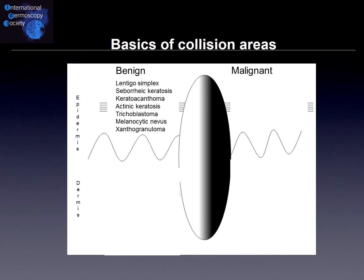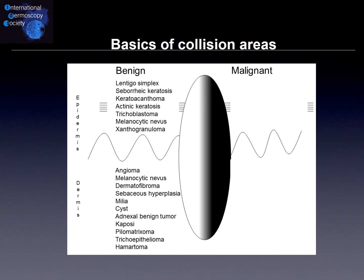When we move to the benign cells and the origin for a benign tumor, we can have it from the dermis with an angioma, also melanocytic nevus — remember the dermal nevus — the dermatofibroma, sebaceous hyperplasia, milia, and also the benign Kaposi's sarcoma which you can put into this category.